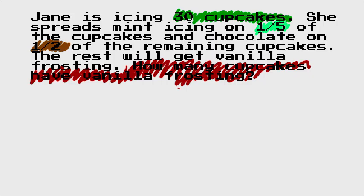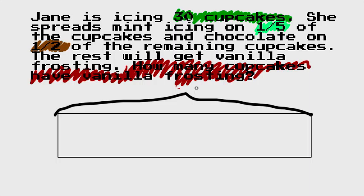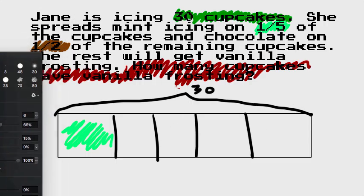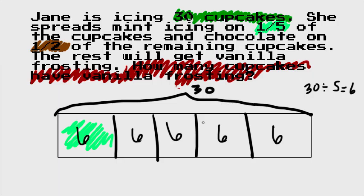First, we want to draw a tape diagram representing the 30 cupcakes. I could draw the cupcakes out, but that would take forever. So we say that rectangle is 30 cupcakes. If she spreads mint on a fifth, that means this has to be split up into five equal parts. So here we go — she spreads mint on one-fifth. If there are five boxes, we divide 30 by 5: 30 ÷ 5 = 6. That six means six cupcakes in each box.